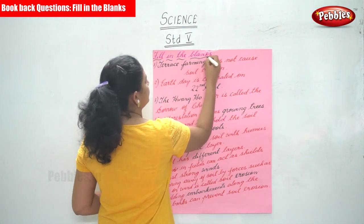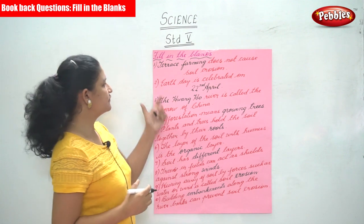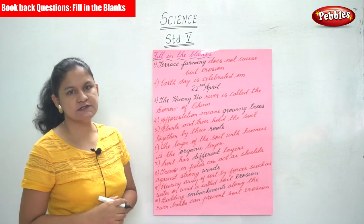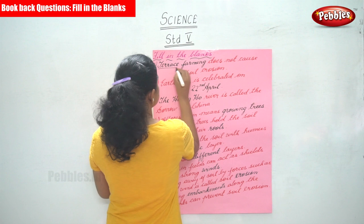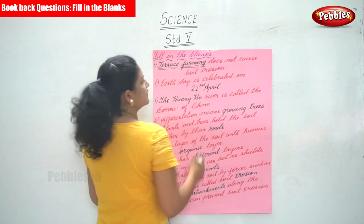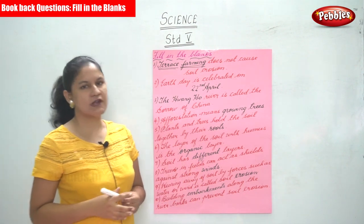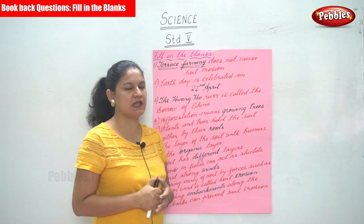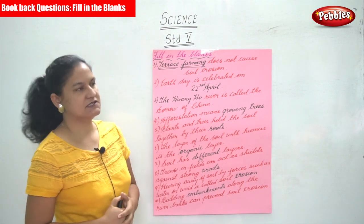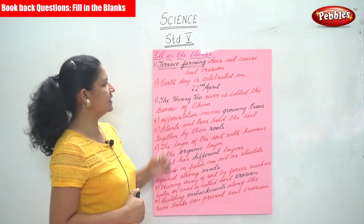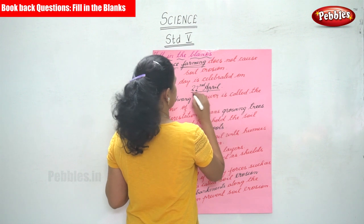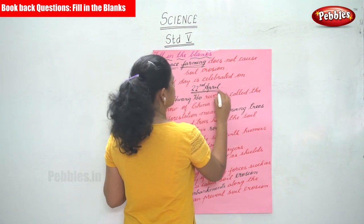The first sentence is: terrace farming does not cause soil erosion. Terrace farming — that is, cutting of steps along the hills — is known as terrace farming. Terrace farming does not cause soil erosion. The next sentence is: Earth Day is celebrated on the 22nd of April.